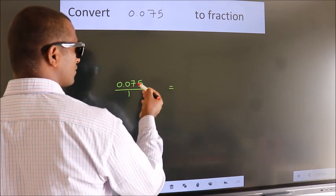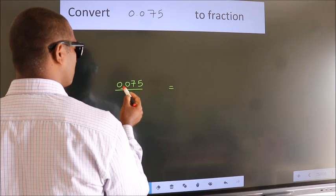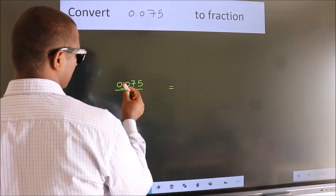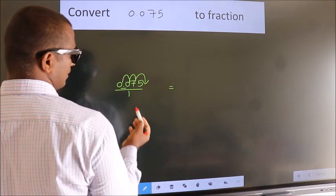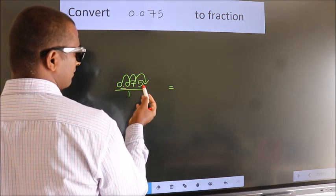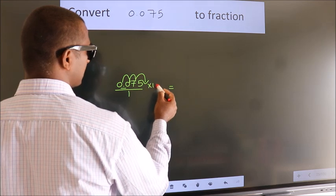To convert this to fraction, we have to move this decimal after 1, 2, 3 numbers. To move this decimal after 3 numbers, we should multiply it with 1000.